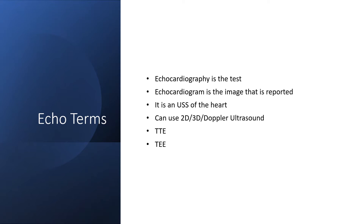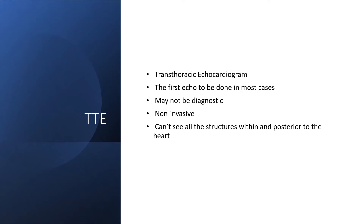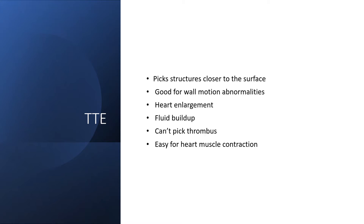Many times we do transthoracic echo first, then transesophageal echo to make a definitive diagnosis, but many other times we go straight to transesophageal echo. TTE — transthoracic echo — is the first echo to be done in most cases, but may not be diagnostic. It is non-invasive and can see all structures within and posterior to the chest. TTE captures structures closer to the surface and is good for wall motion abnormalities.